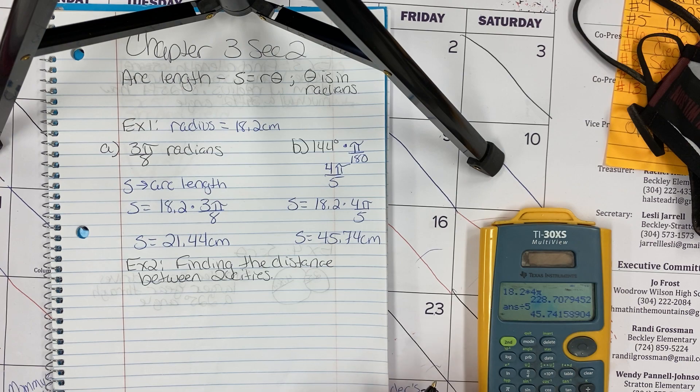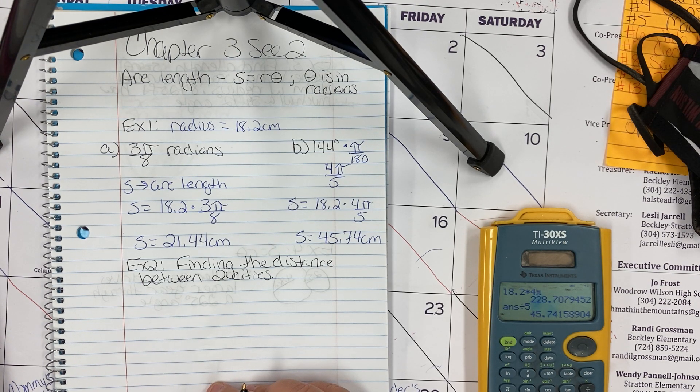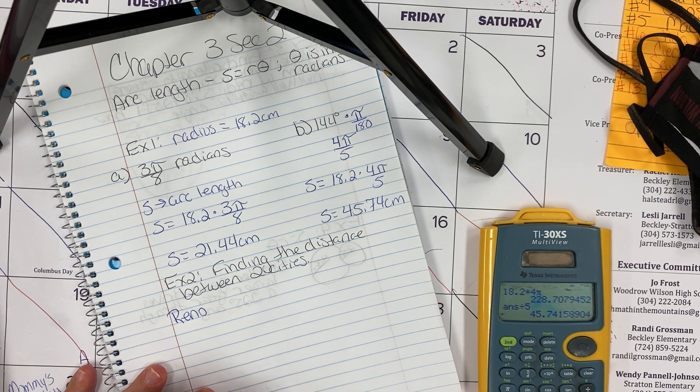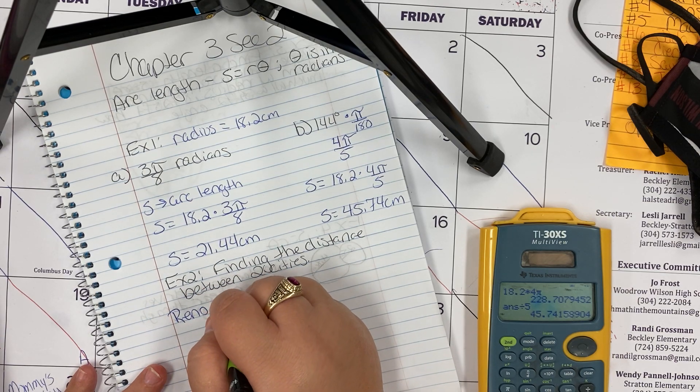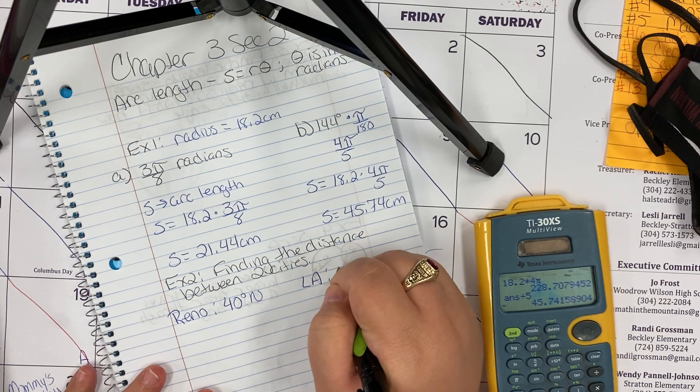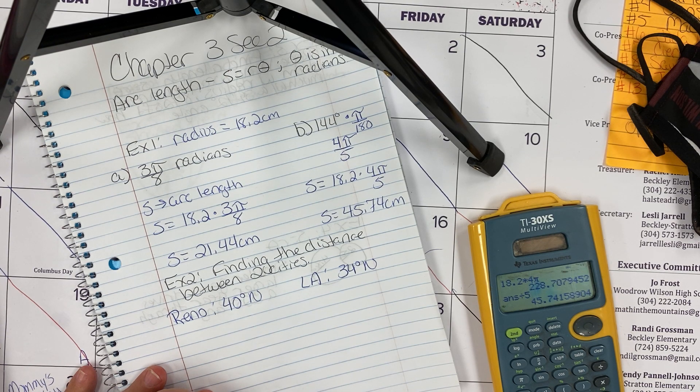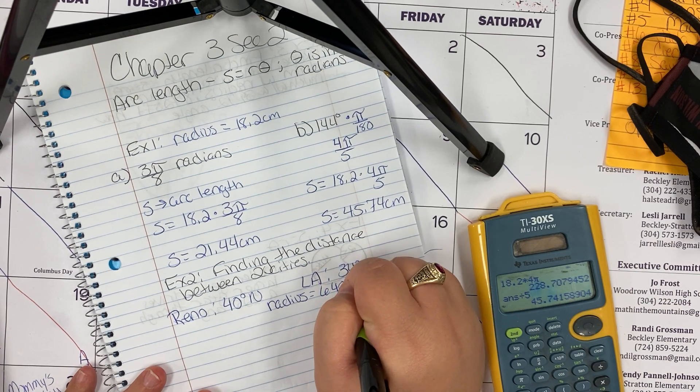Example two is a word problem to find the distance between two cities. It gives the measure of a central angle with a vertex at the earth's center whose initial side goes through the equator and whose terminal side goes through the given location. Reno, Nevada is approximately due north of Los Angeles. The latitude of Reno, Nevada is 40 degrees north and that of Los Angeles. The 34 degrees means north of the equator. The radius of the earth, and this number is never going to change, is 6400 kilometers.